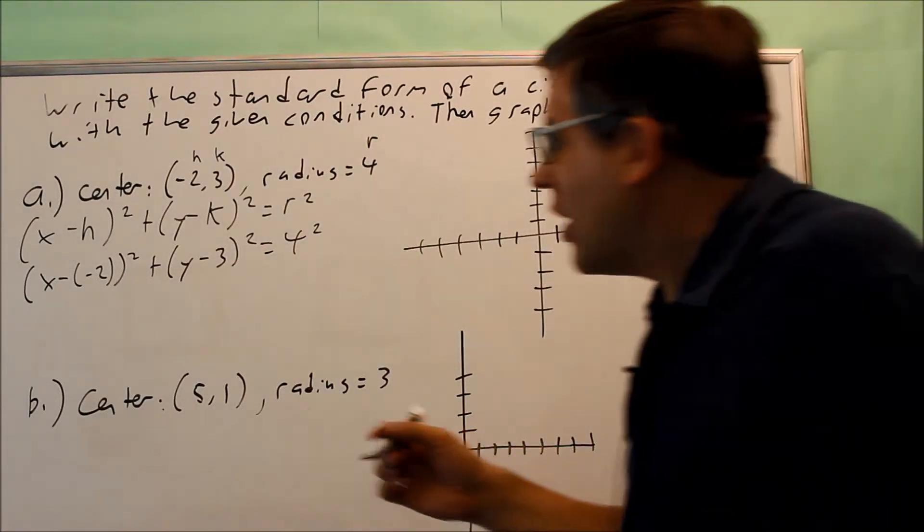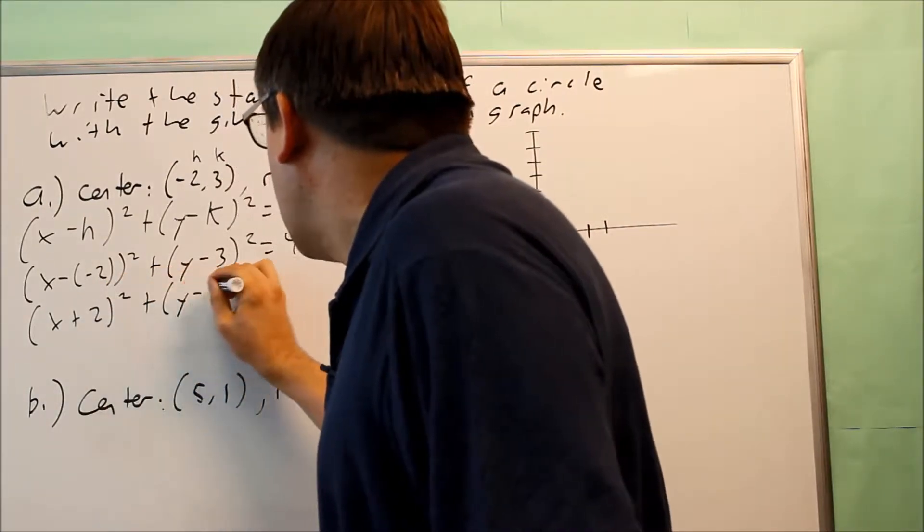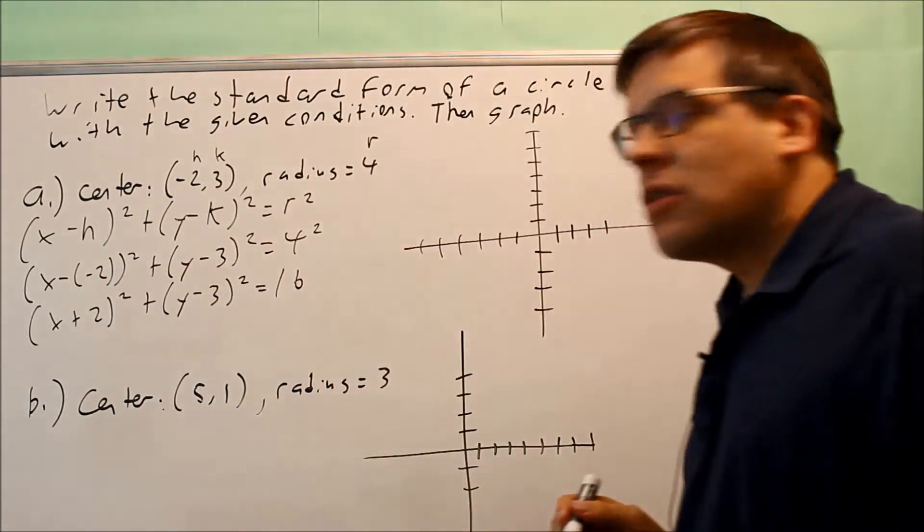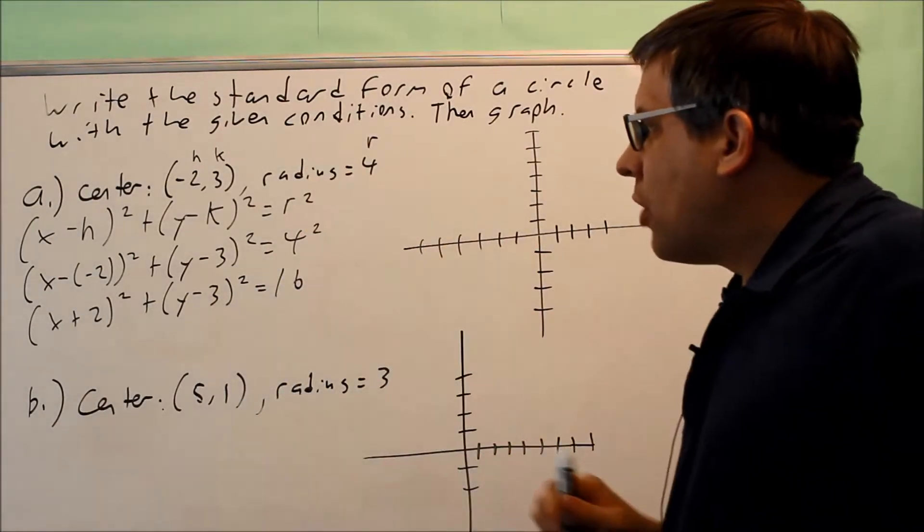Now we just want to simplify it. (x + 2)² + (y - 3)² is going to equal 16, and this would be the standard form equation for part a.